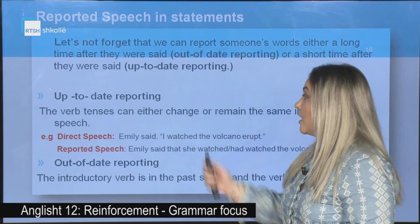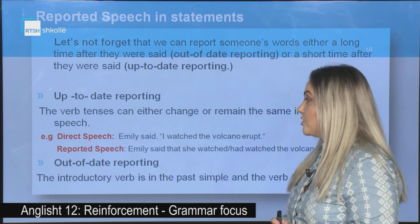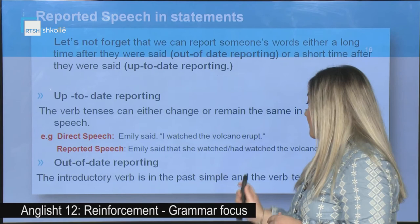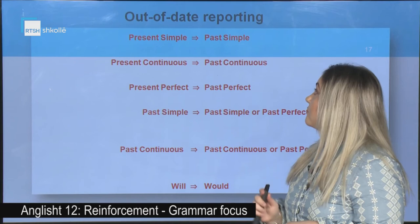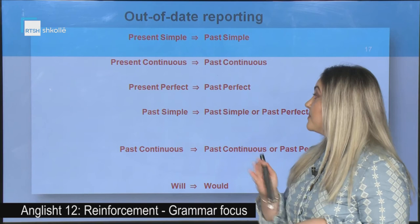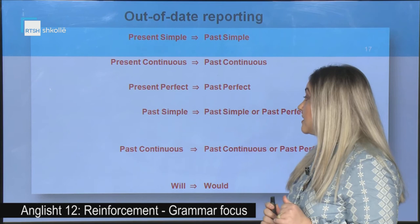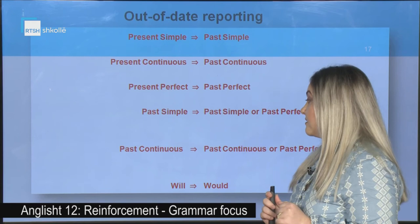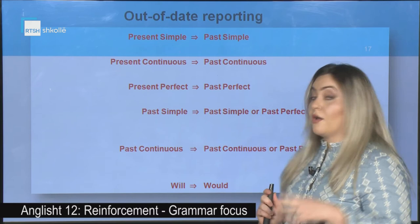In up-to-date reporting, verb tenses can either change or remain the same. But in out-of-date reporting, the introductory verb is in the past simple and verb tenses change. Verbs in present simple become past simple; present continuous becomes past continuous; present perfect becomes past perfect; past simple becomes past simple or past perfect; past continuous becomes past continuous or past perfect continuous. Also, will becomes would.